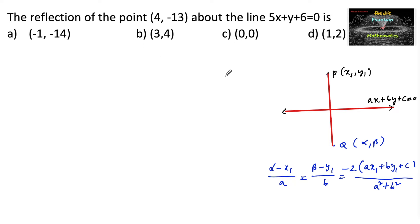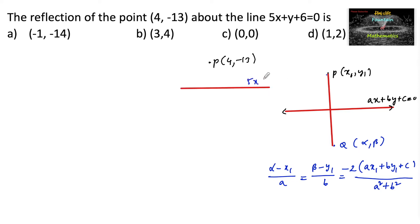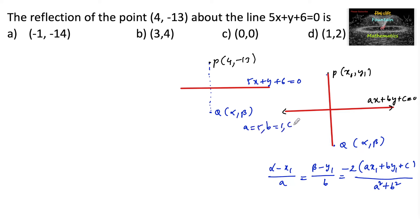Similarly, for the reflection of the point (4, -13) under the line 5x + y + 6 = 0, let us consider the image point B(α, β). Comparing with the formula: a = 5, b = 1, c = 6, x1 = 4, and y1 = -13.